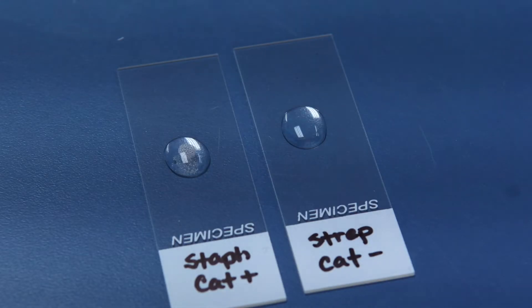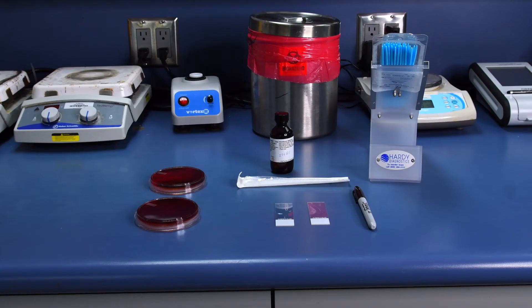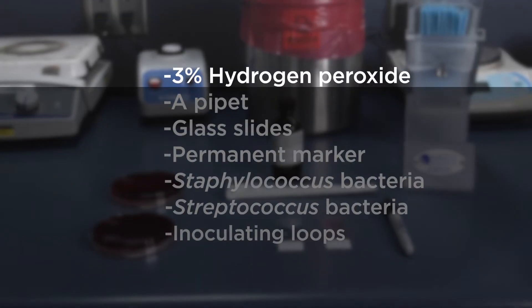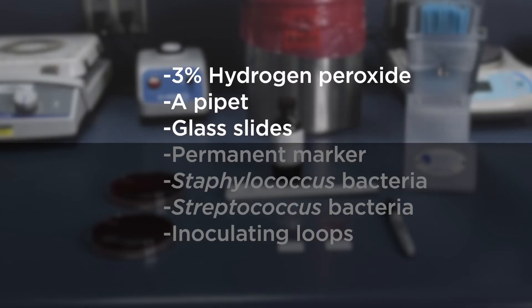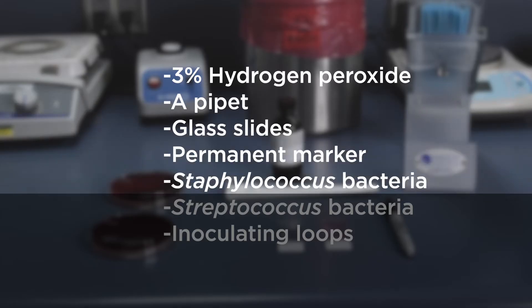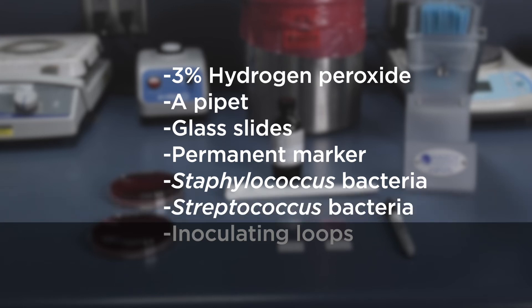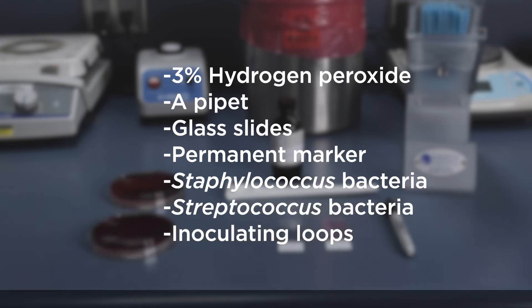A positive reaction will produce bubbles of oxygen gas. In order to perform a catalase test, you will need 3% hydrogen peroxide, a pipette, glass slides, permanent marker, Staphylococcus bacteria, Streptococcus bacteria, and inoculating loops.